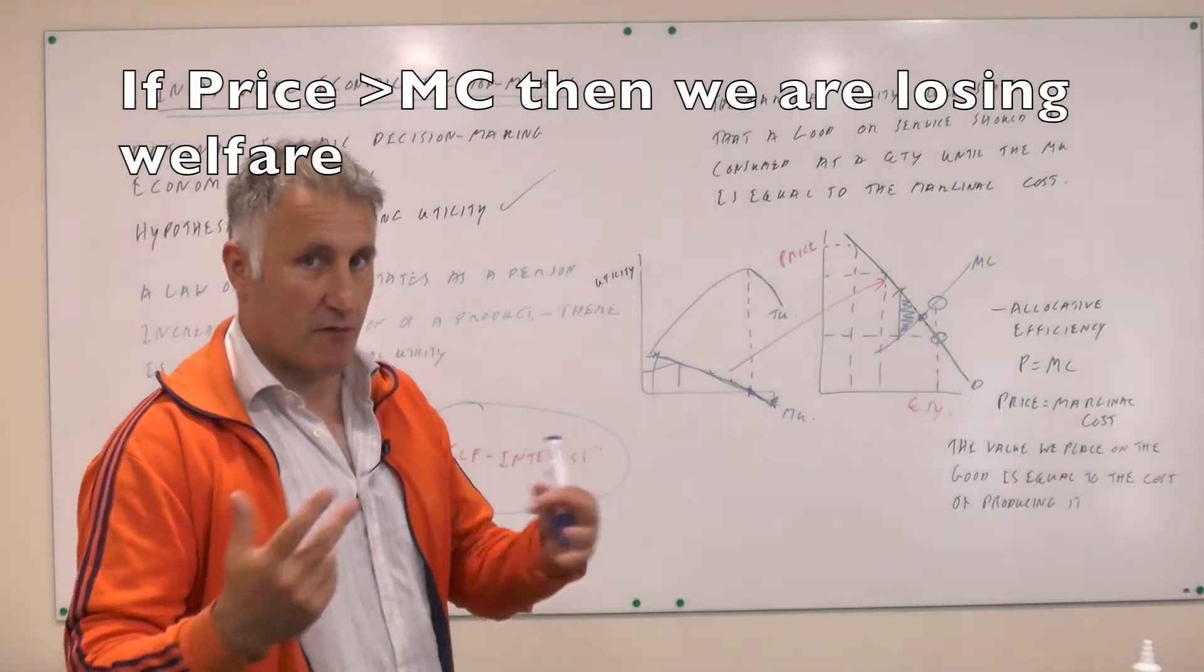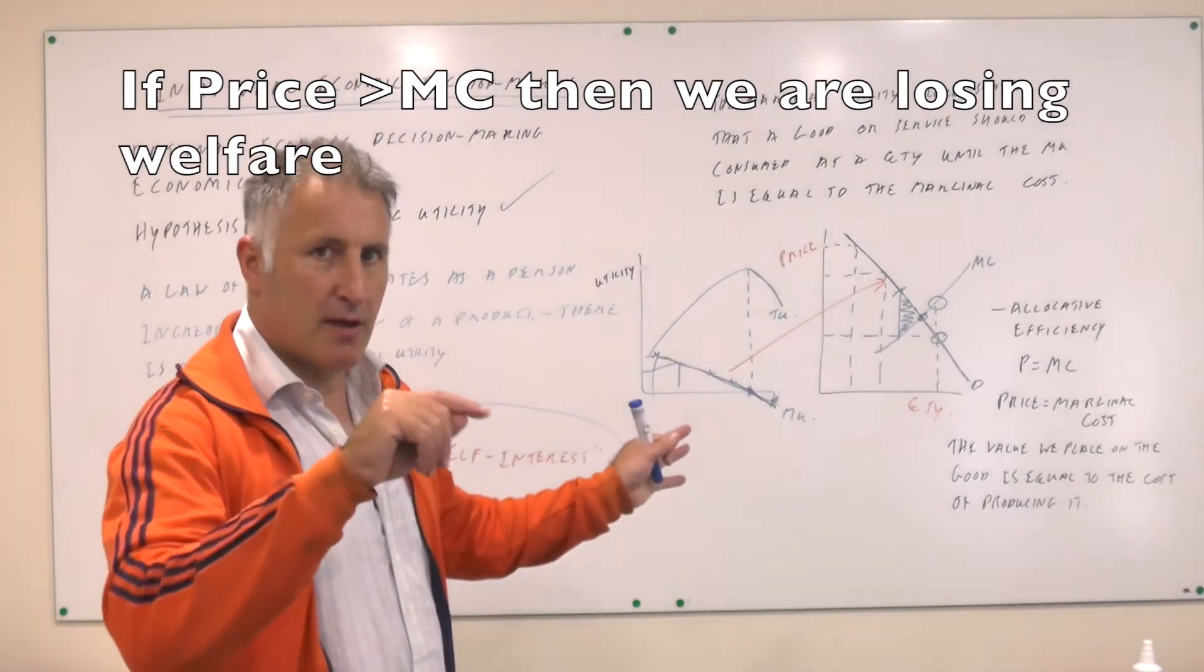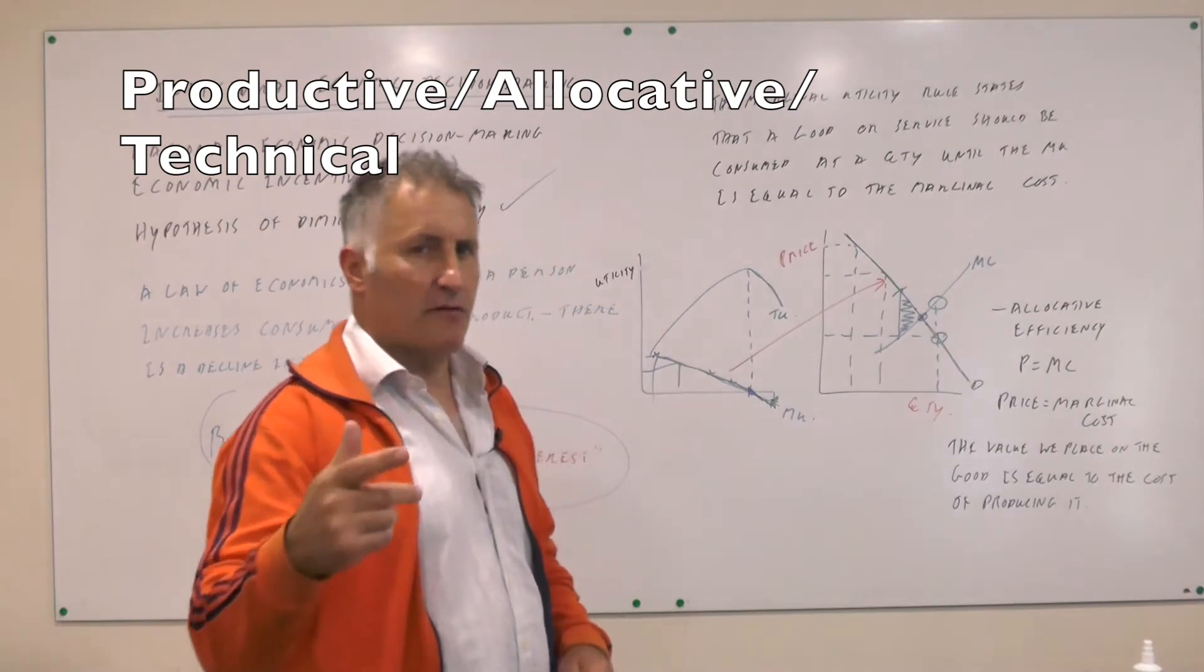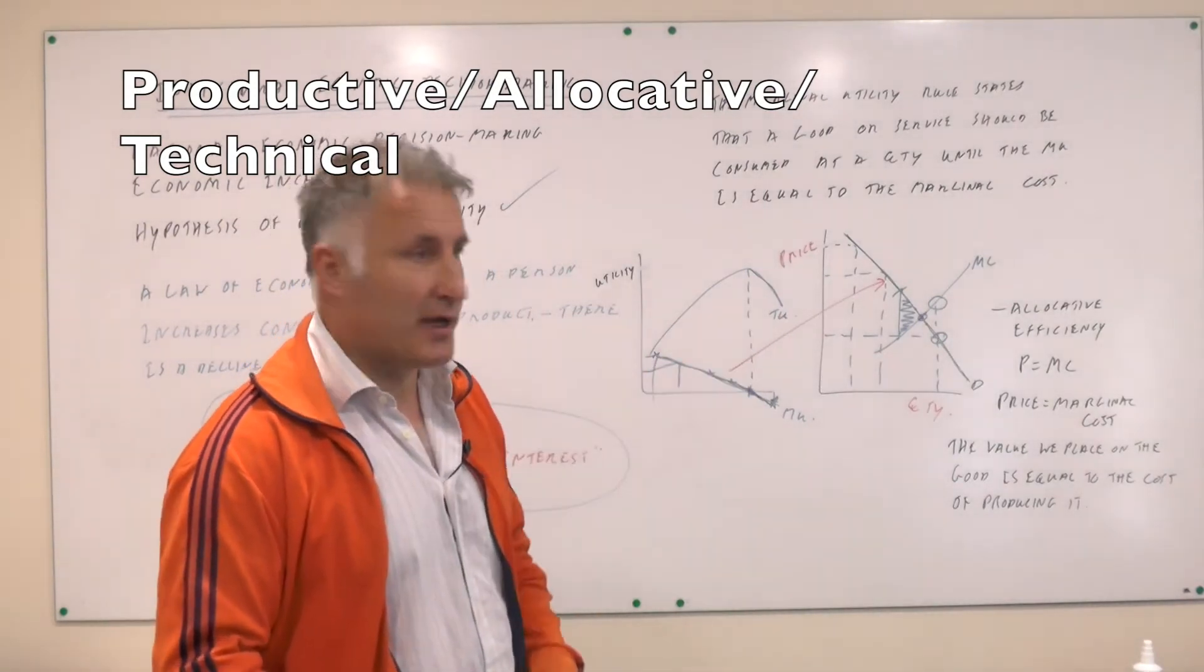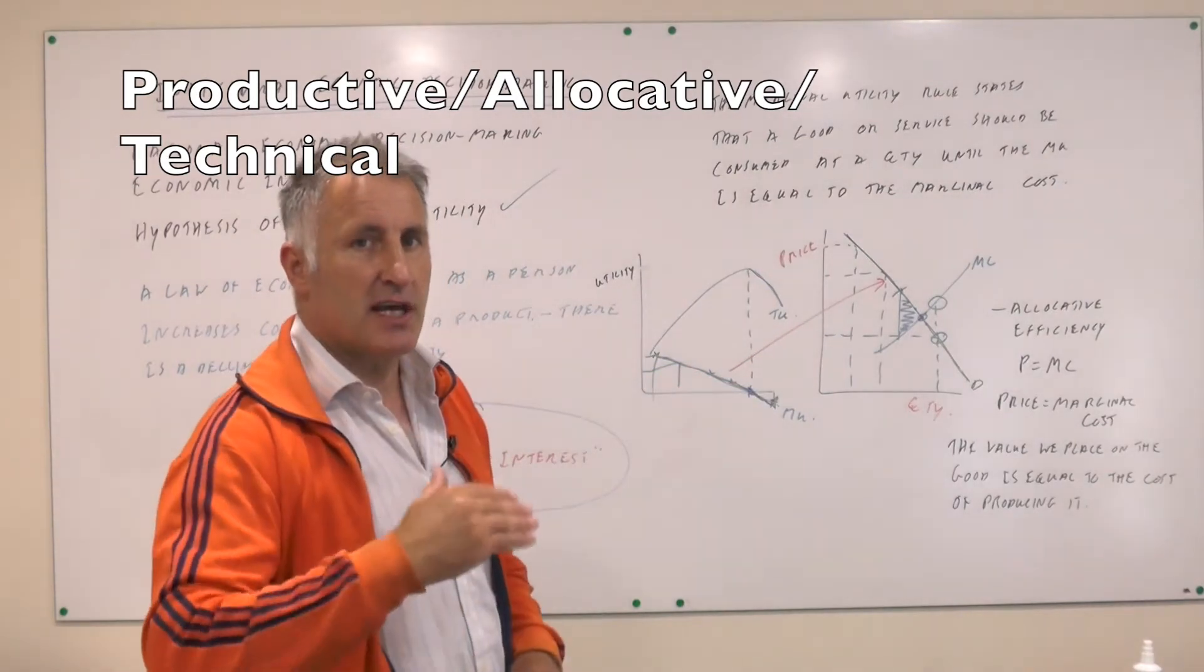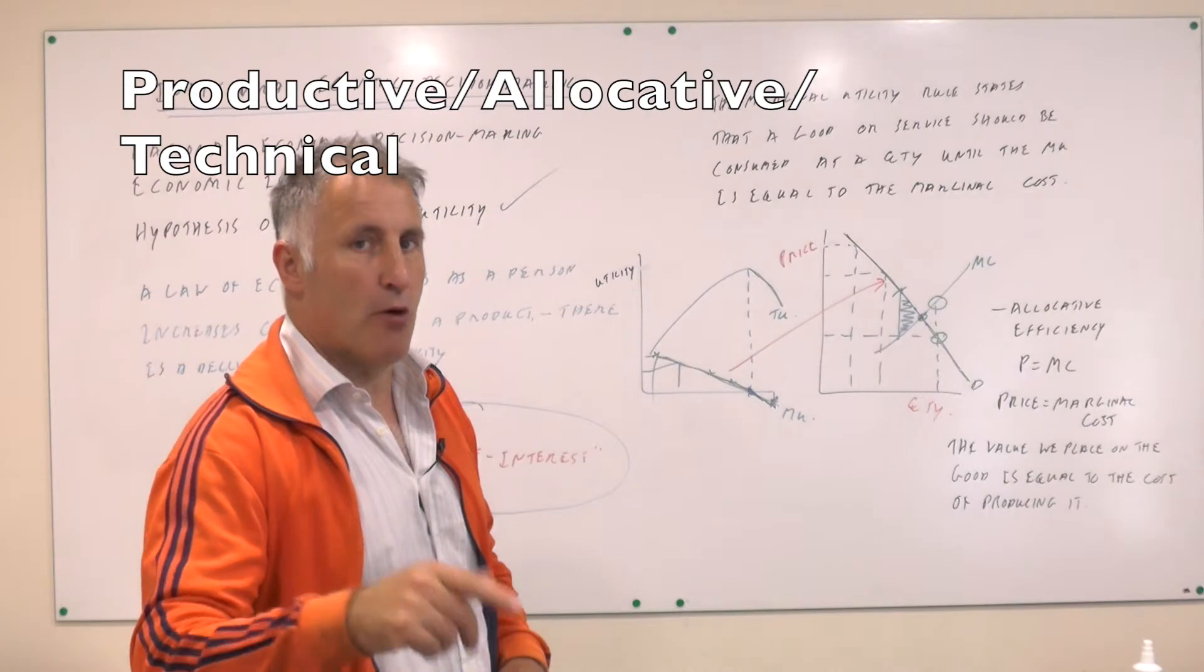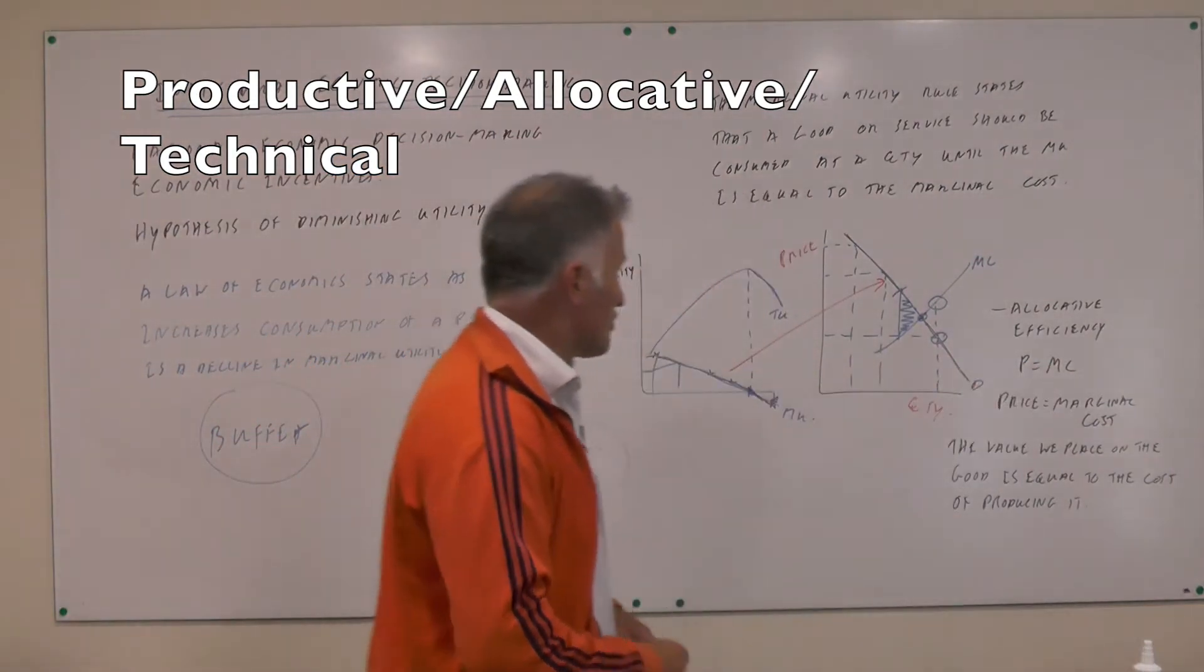So far in the course, we've done productive efficiency, getting maximum output from the inputs, and that's at the edge of the production possibility curve. And then we do technical efficiency. And then we're now doing allocative efficiency. Productive efficiency is producing at the lowest possible cost. Technical efficiency is getting the maximum output from the inputs. And allocative efficiency is where the price is equal to the marginal cost.